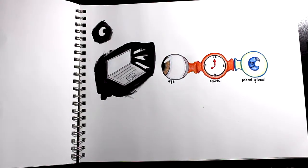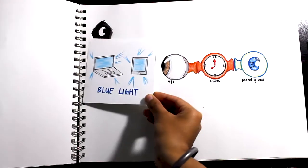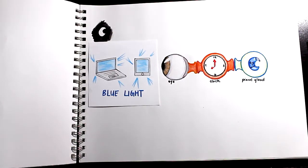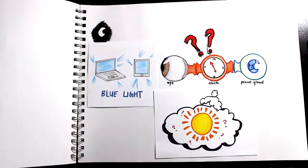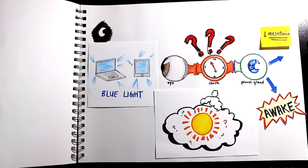Electronic devices with screens emit a light that is slightly blue. It isn't blue enough for us to notice, but our brains notice it. The blue light tells our clock it is daytime and causes our pineal gland to release less melatonin.